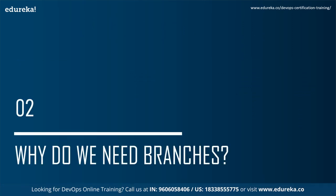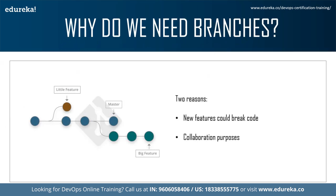There are two main reasons we want branches. Firstly, if you're creating a new feature for your project, there is a reasonable chance that adding it could break your working code — which could be very bad for active users. It's better to start with a prototype in a different branch and see how it works before deciding whether to add the feature to the repository's master for others to use.